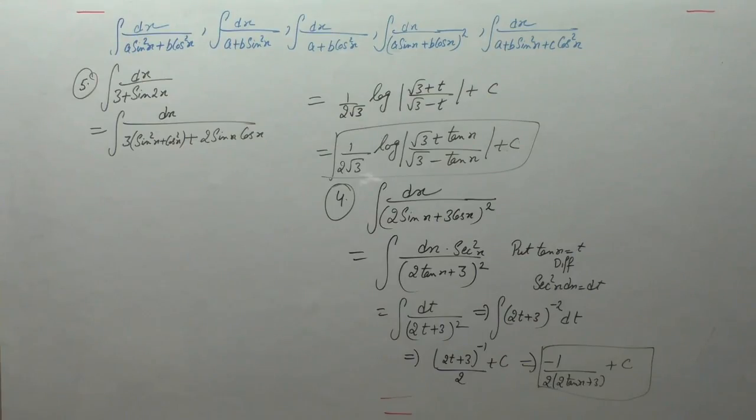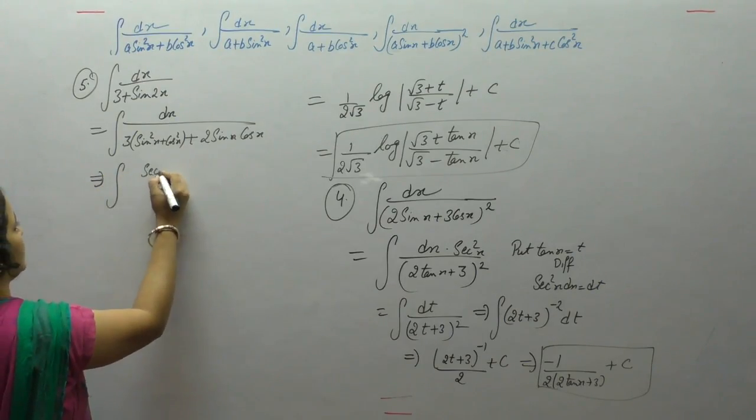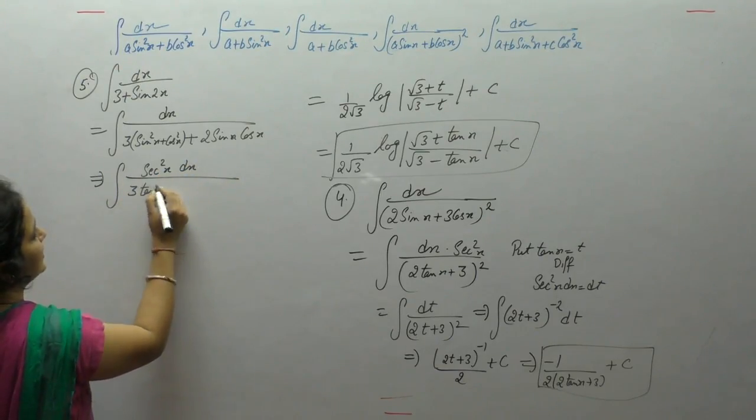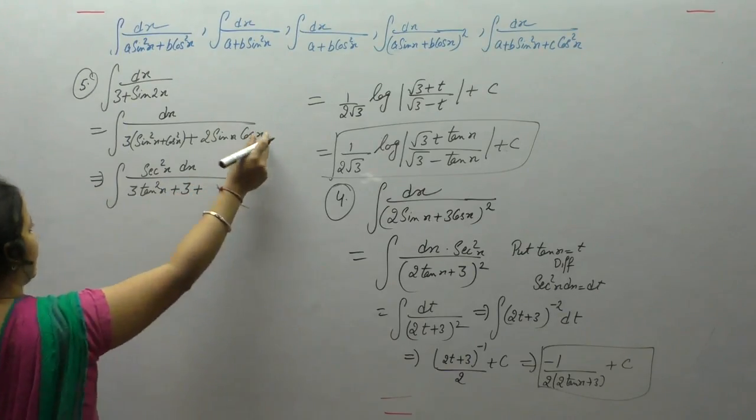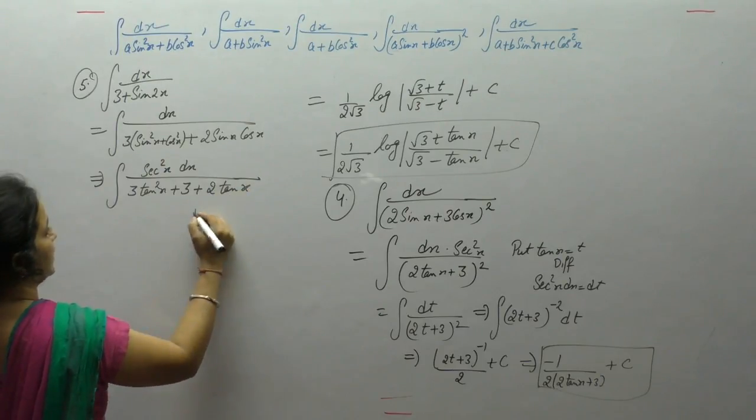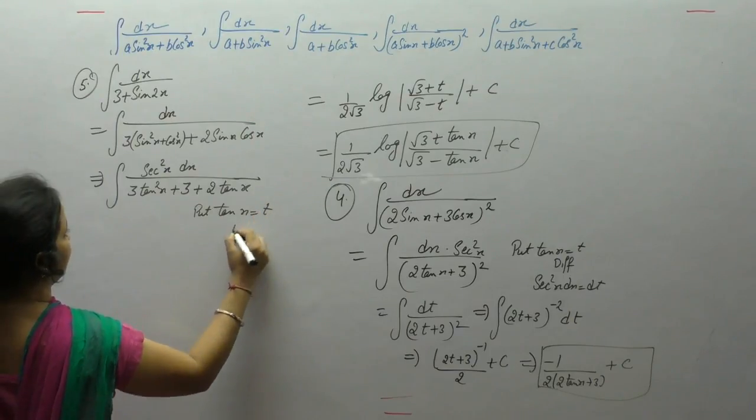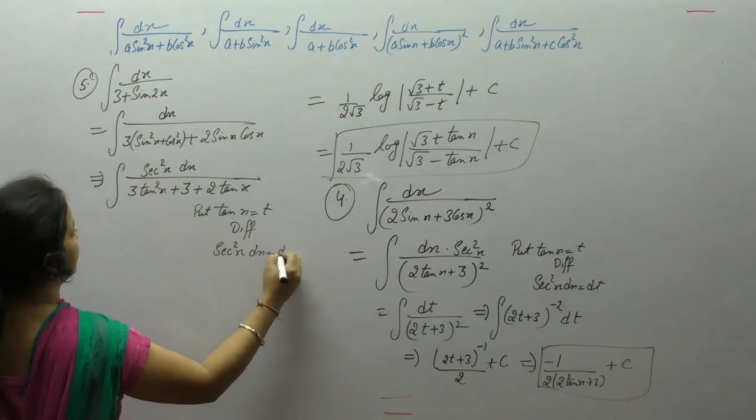Now divide the numerator and denominator by cos square x, 1 upon cos is sec square x, sin upon cos is tan, cos upon cos is 1, divide it by cos square x, we get 2 tan x. Now put tan x as t, derivative of tan x is sec square x dx dt.